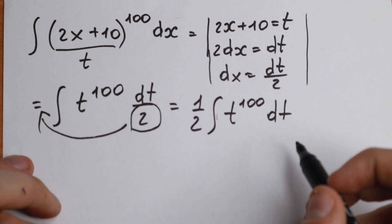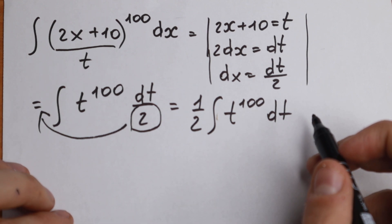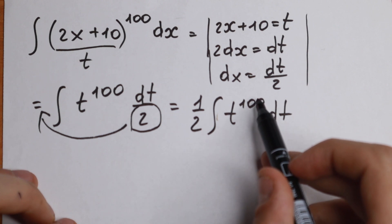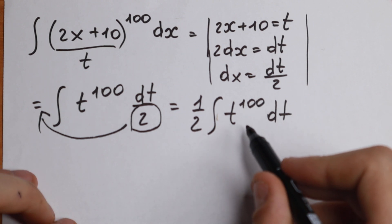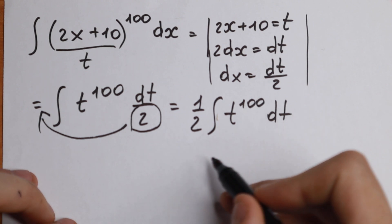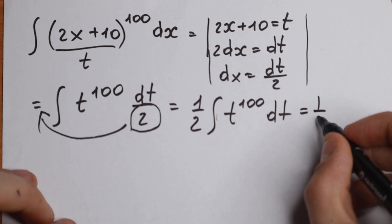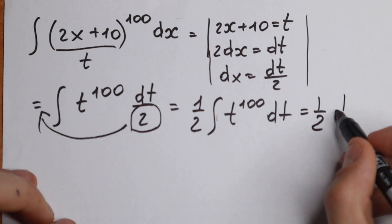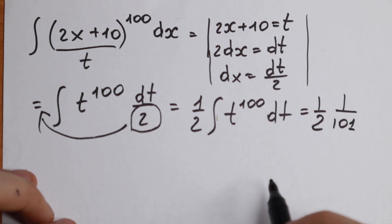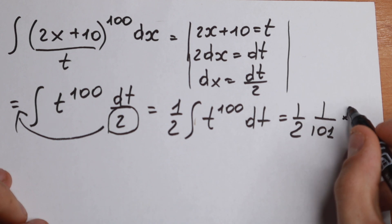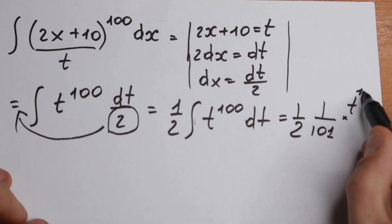And how can we integrate this? Of course, easily, without any trouble. So first of all, we need to add one and divide by this. We have it like x squared, x cubed divided by 3. Instead of x, we have t, so we can write it as 1 half and 1 over 101. This is a constant, this is our integration step, and times t to the power 101.